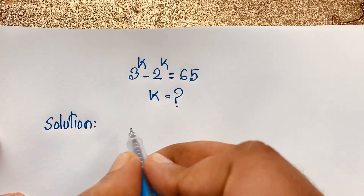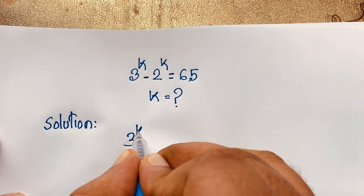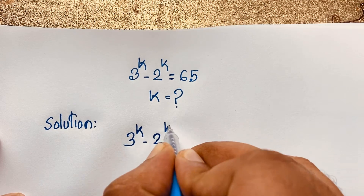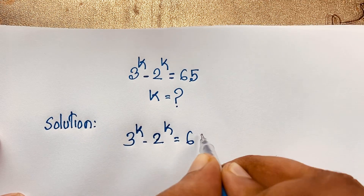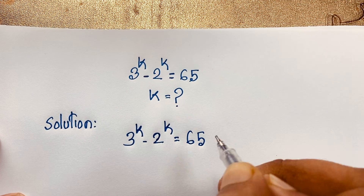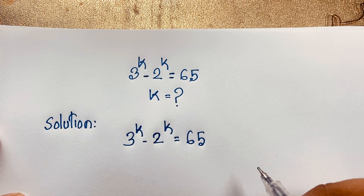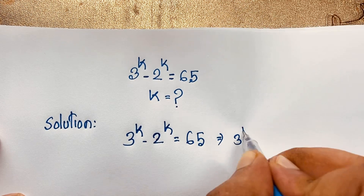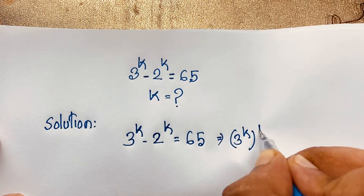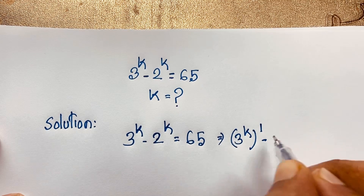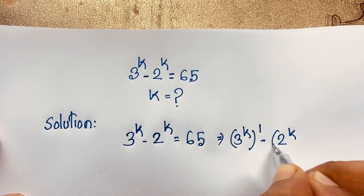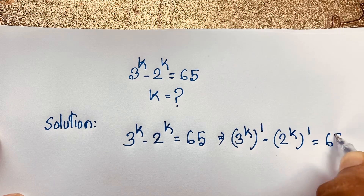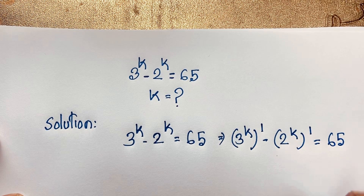Our question is: 3 to the power k minus 2 to the power k is equal to 65. You can see this expression — 3 to the power k, bracket power 1, minus 2 to the power k, bracket power 1, is equal to 65. I will solve this question step by step.